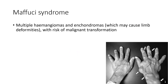Next is Maffucci syndrome. In this case there are multiple hemangiomas and enchondromas, which may cause limb deformities with risk of malignant transformation. A picture shows multiple enchondromas, and Maffucci syndrome may also have multiple orbital hemangiomas.